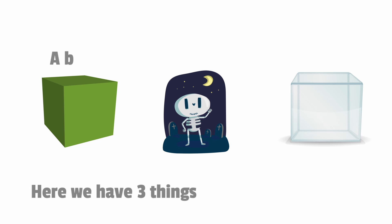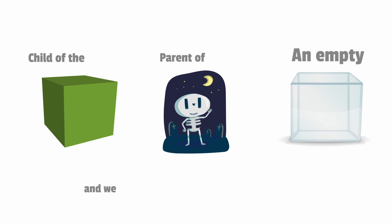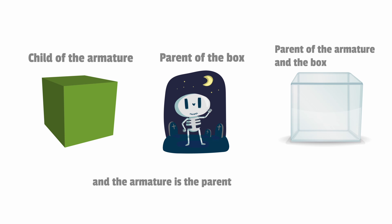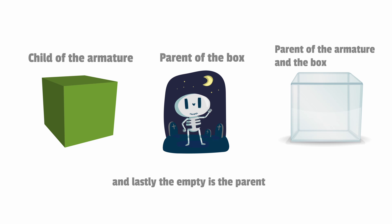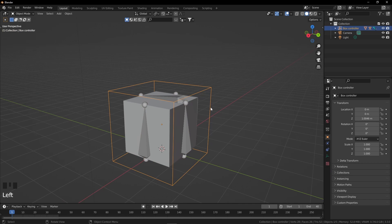Let me explain what we have done here. We have three things: a box, an armature, and an empty. The armature is controlling the box because we parented the box to our armature, and we parented the armature to the empty. The box is the child of the armature and also the empty. The armature is the parent of the box and child of the empty. The empty is the parent of both the box and the armature — meaning the empty can control both.